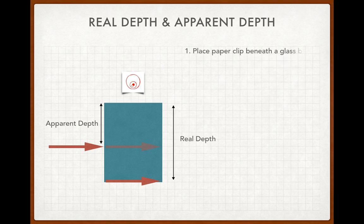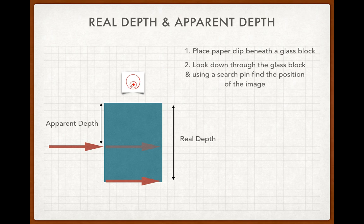To recap: place the paper clip beneath the glass block, look down, and use a search pin to find the position of the image. Measure the real depth and apparent depth using a meter stick.